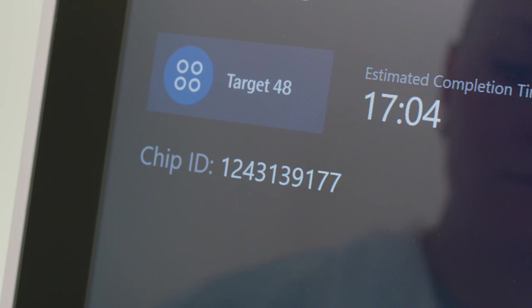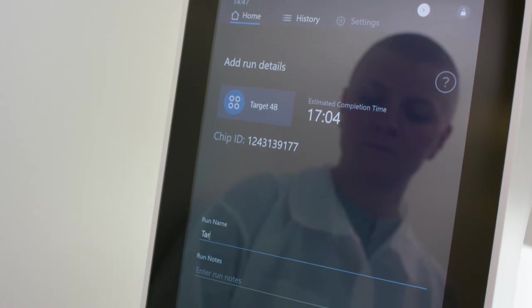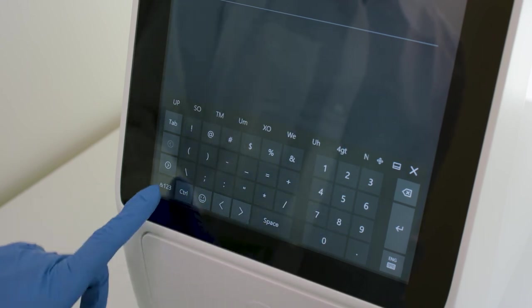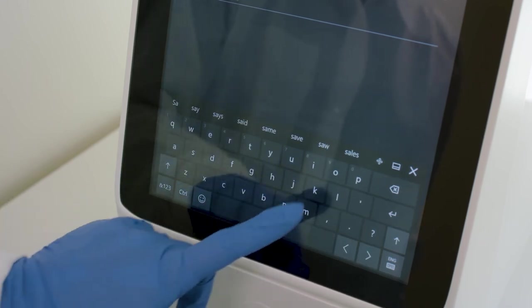On the Add Run Details screen, confirm the chip ID, then enter a custom run name or run notes if desired, and select the panel type.